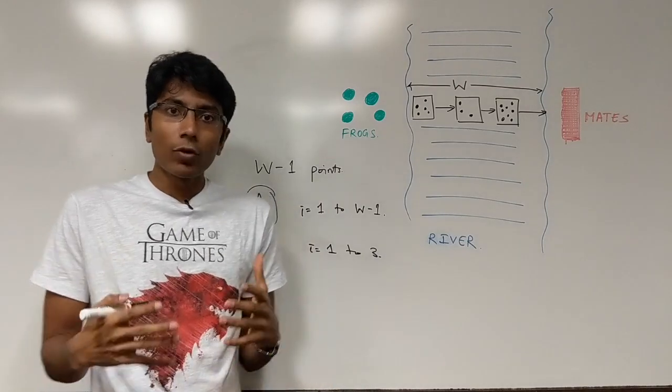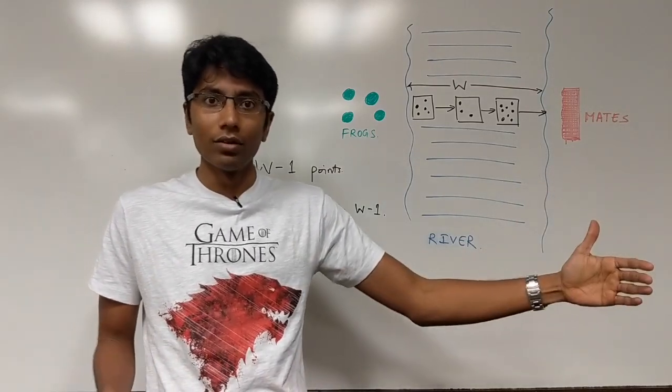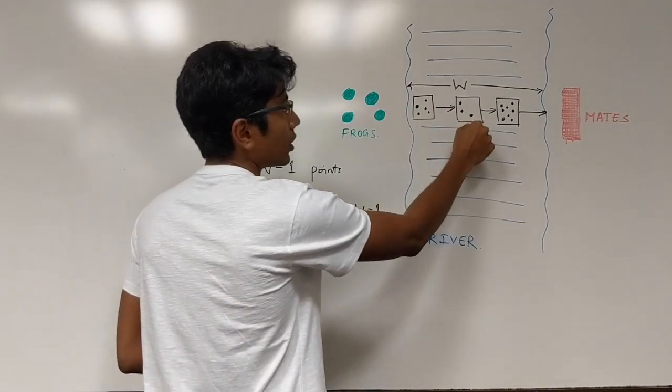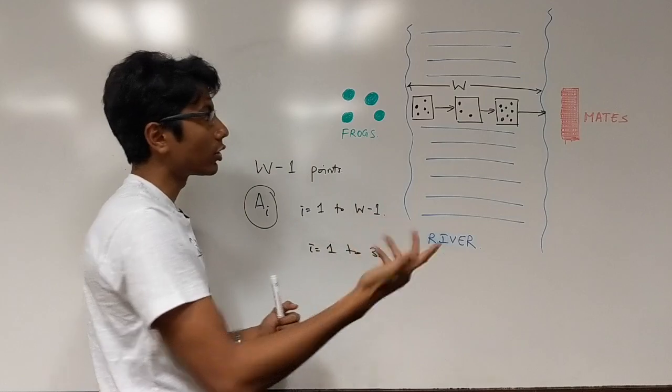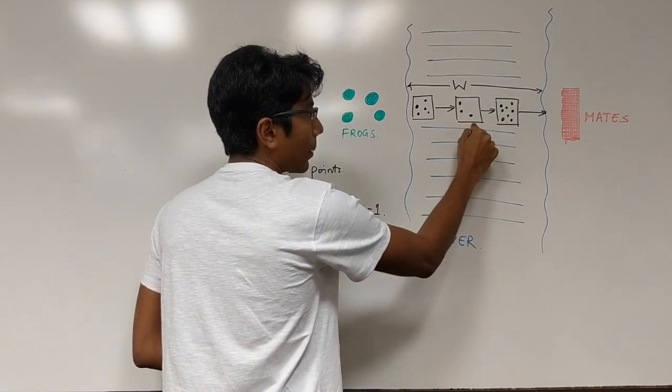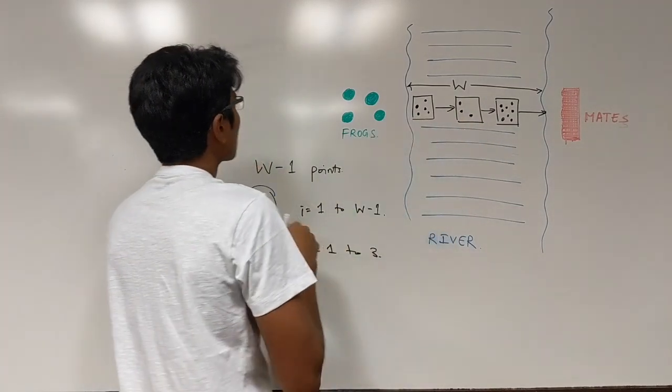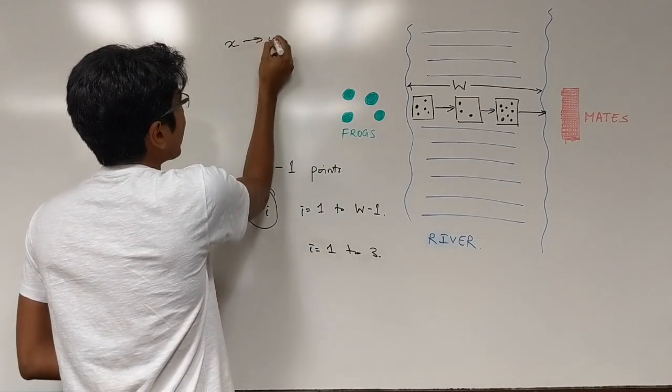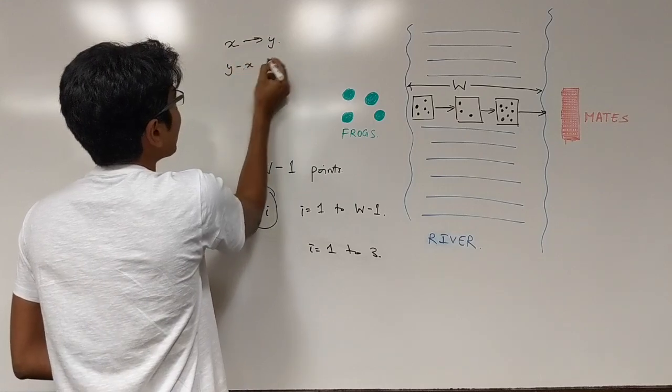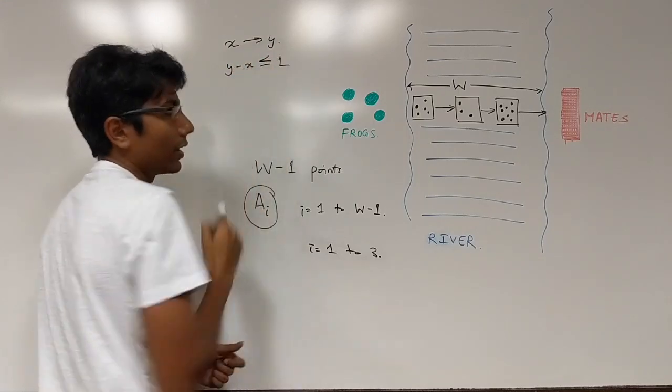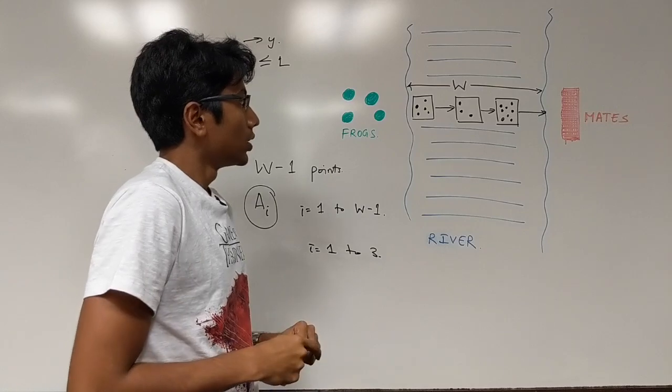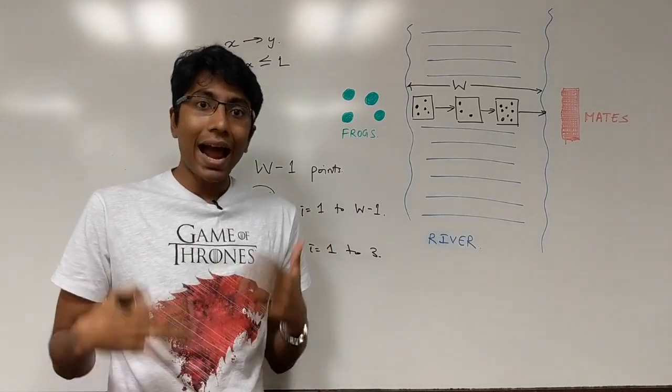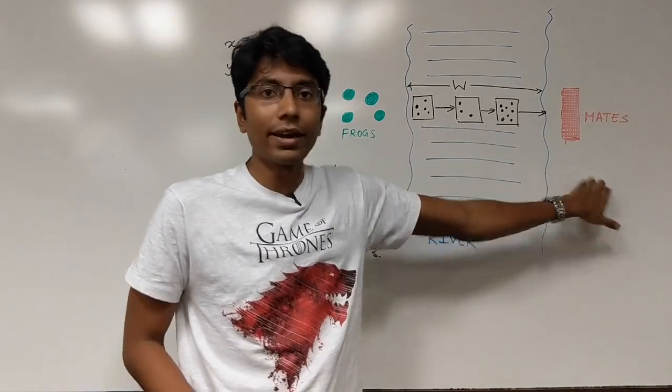The second thing is that a frog can jump at most a distance L. So if it's jumping from here, let's say L is equal to 2, so it can jump up to this point or it can jump up to this point. So a frog's maximum distance that it can make from X to Y is Y minus X has to be less than or equal to L. So your job is to find out how many frogs at most can reach the other side of the river.